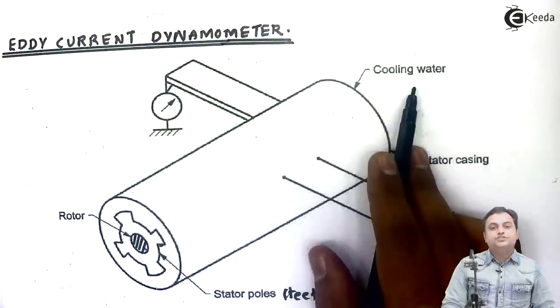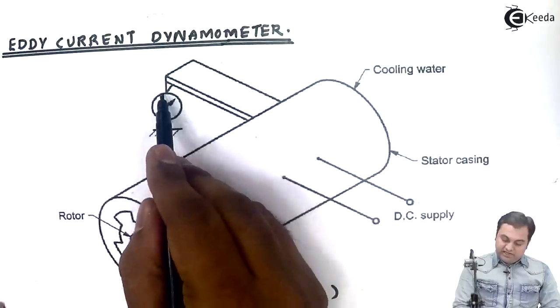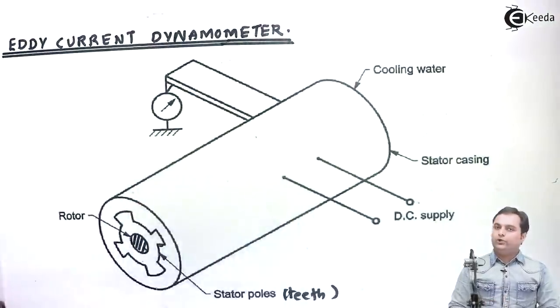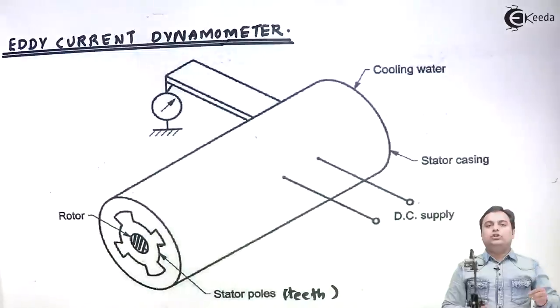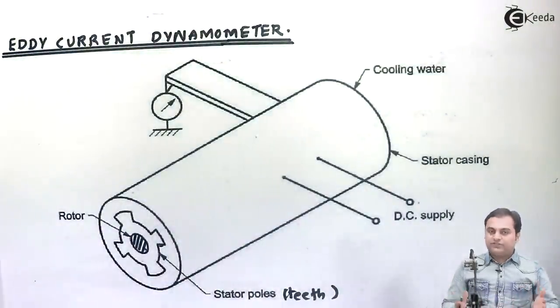For that, a cooling water arrangement is provided. Then we have this arm which is directly connected to a pointer that shows the amount of torque. If we know the torque, we can use the formula to calculate power. So this was regarding the construction.